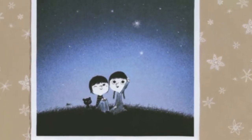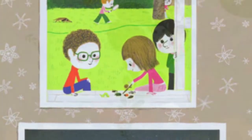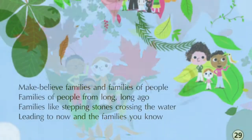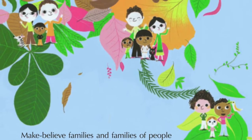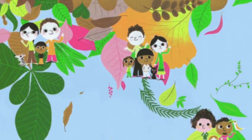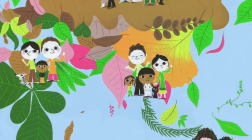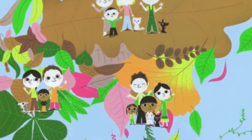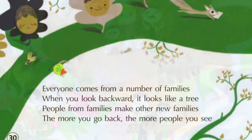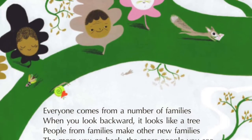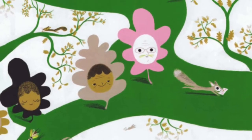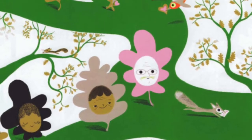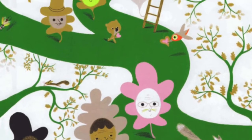Bottle caps, ginger snaps, buttons, or rings — you can make families from all sorts of things. Make-believe families and families of people, families of people from long, long ago — families like stepping stones crossing the water, leading to now and the families you know. Everyone comes from a number of families; when you look backward, it looks like a tree. People from families make other new families — the more you go back, the more people you see.